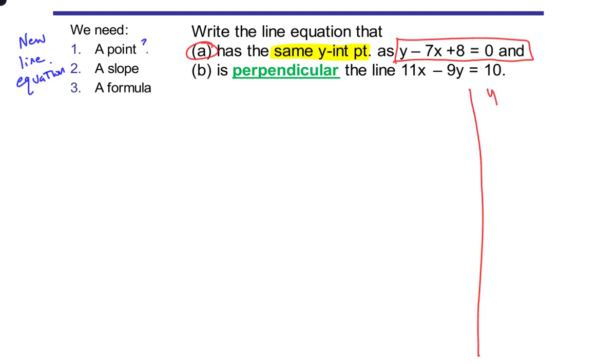I have y minus 7x plus 8 equals 0 and I'm trying to find a point that I can use for my new line. Specifically not just a random point but I want the y-intercept point. Well that reminds me of y equals mx plus b because if I got b I have the y-intercept point. So we can analyze this red equation here to help us find its y-intercept point. And we can do that by getting y by itself. Now I'm going to add the 7x to help get me y by itself.